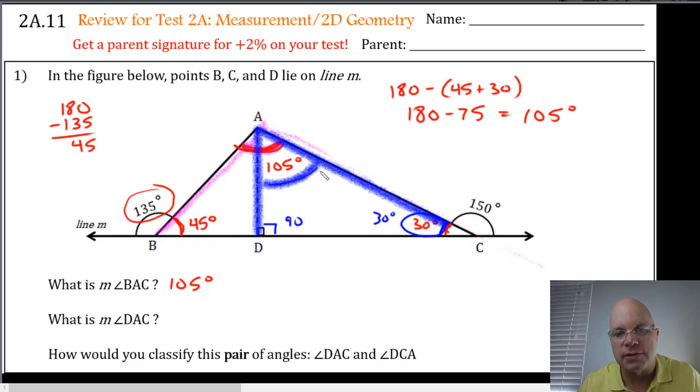And so I'm trying to find this angle. So this time we'll do 180 minus 90 plus 30. 90 plus 30 is 120. So that would give me 60 degrees for angle DAC, 60 degrees.